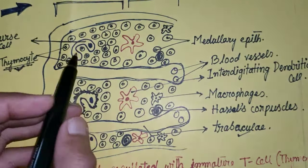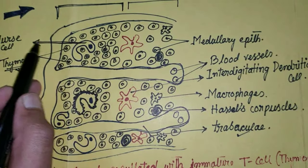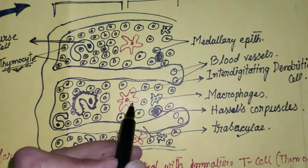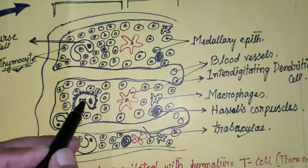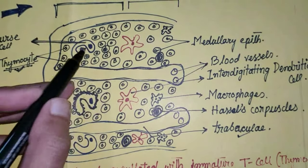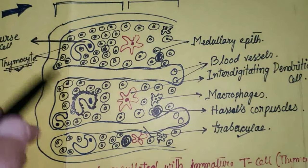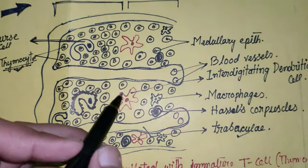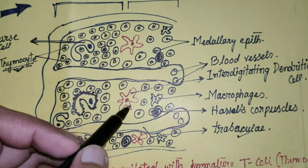Now let us talk about the other cells of the thymus. First, the nurse cells — these are the interdigitating dendritic cells inside the thymus. These nurse cells, also called NARS cells, are the interdigitating dendritic cells.